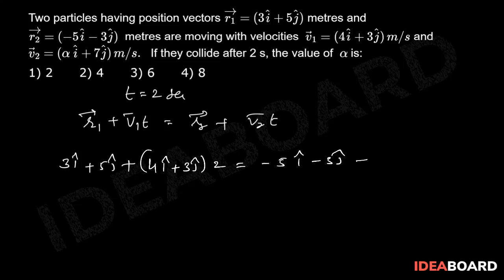Now expand: 3 plus 8i cap plus 11j cap equal to 2 alpha minus 5i cap plus 11j cap.